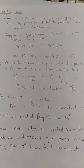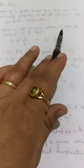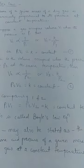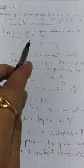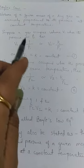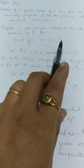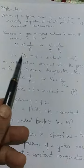Suppose we have a gas and we consider two cases of its behavior. In Case 1, the gas occupies volume V1 when its pressure is P1. As per the law, volume is inversely proportional to pressure, and temperature remains constant. Removing the proportionality sign, we put K, so V = K/P. Cross-multiplying gives us P1 × V1 = K, where K is a constant. This is the first equation.